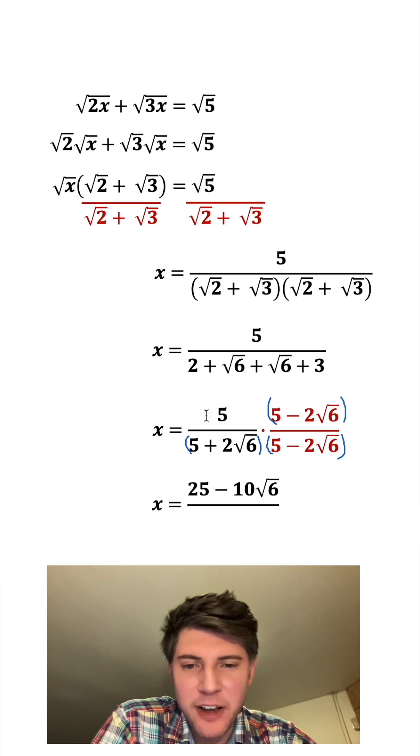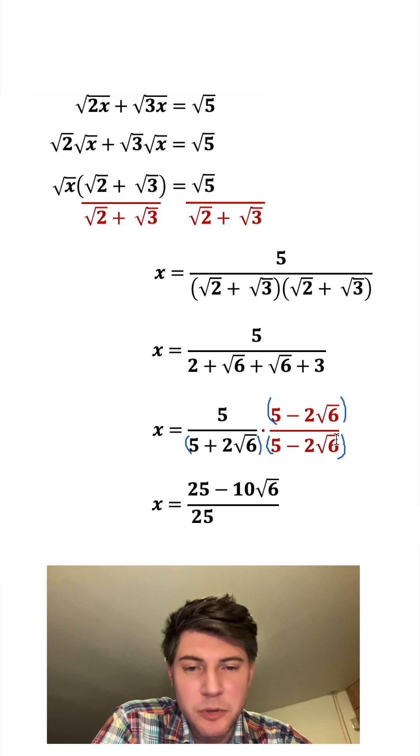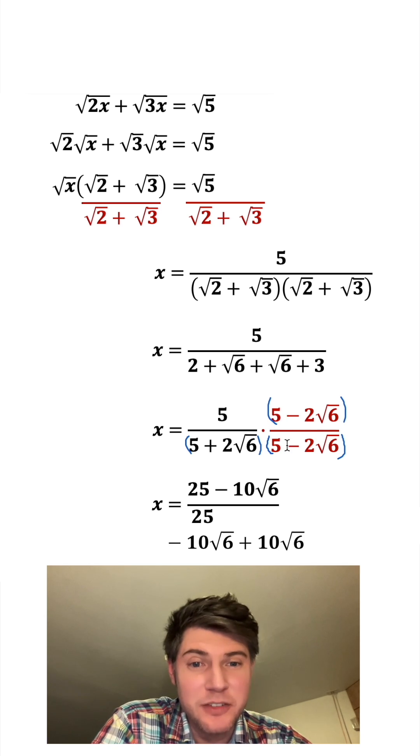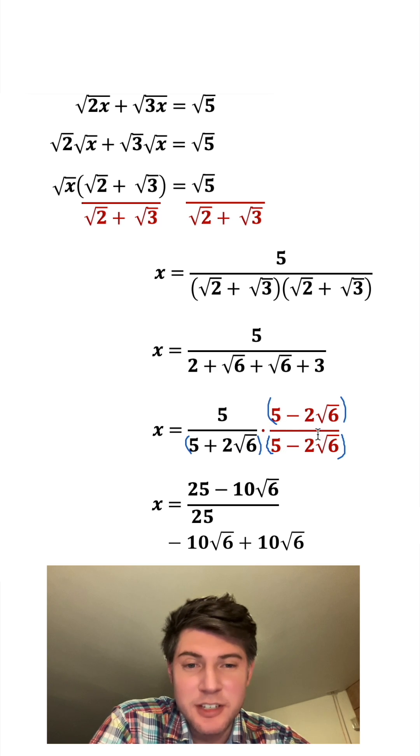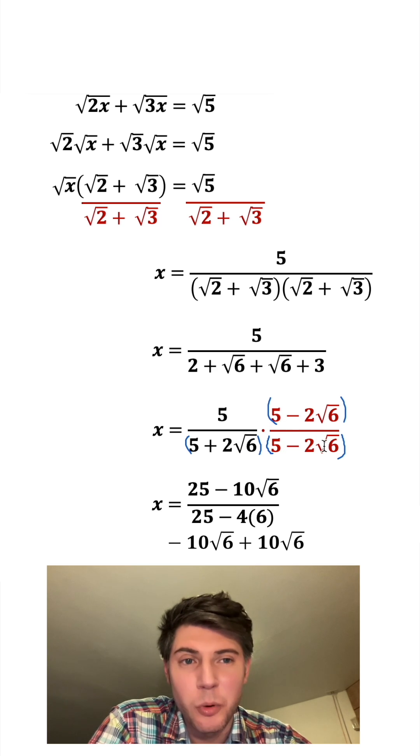And on bottom we have 5 times 5 which is 25, 5 times negative 2 root 6 which is negative 10 root 6, 2 root 6 times 5 which is positive 10 root 6, and 2 root 6 times negative 2 root 6 which is negative 4 times 6.